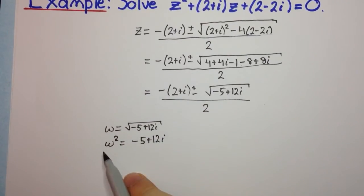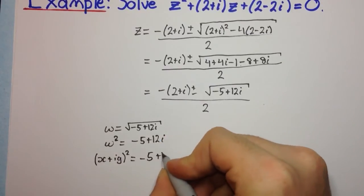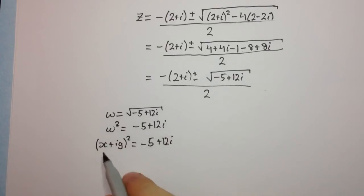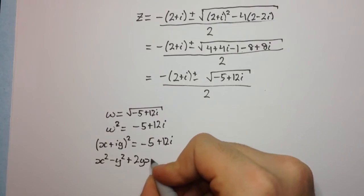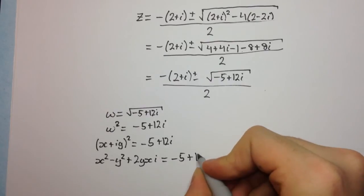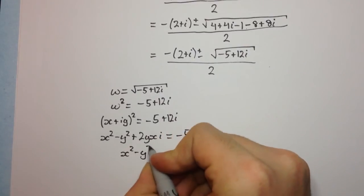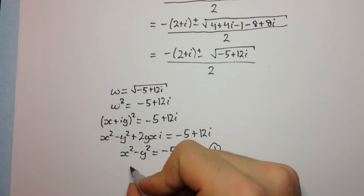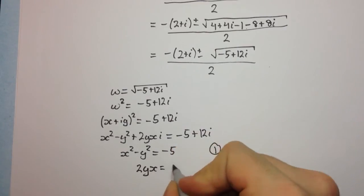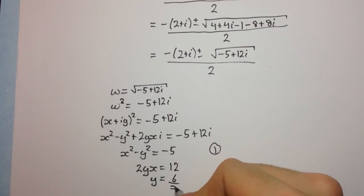If we let omega equal x + iy, then (x + iy)² equals minus 5 + 12i. Expanding, we get x² minus y² plus 2xyi equals minus 5 + 12i. Equating real and imaginary parts: x² minus y² equals minus 5 — call that equation 1 — and 2yx equals 12, so y equals 6 over x — call that equation 2.